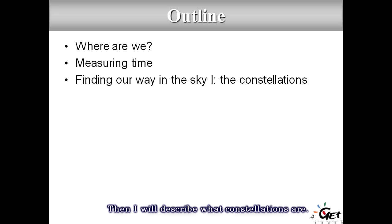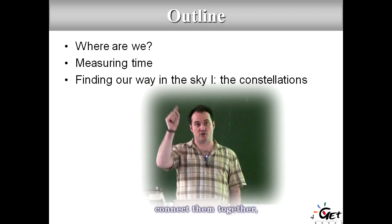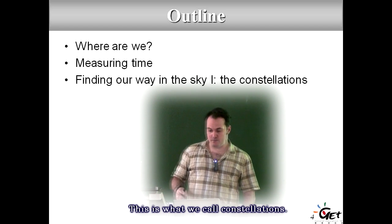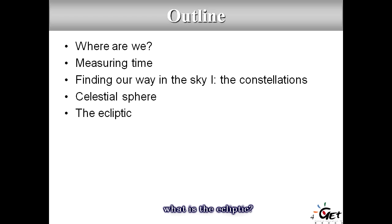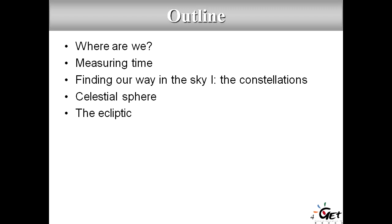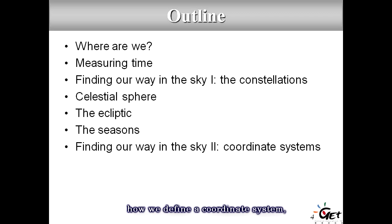Then I'll describe what constellations are — probably something you're familiar with. In the past we took several stars, connected them together into a geometric form, and related it to a story. That's what we call constellations. Then we'll introduce the concept of the celestial sphere, what the ecliptic is — the path of the sun in our sky — how we define seasons, and how we define our coordinate system to spot objects in the sky very accurately.